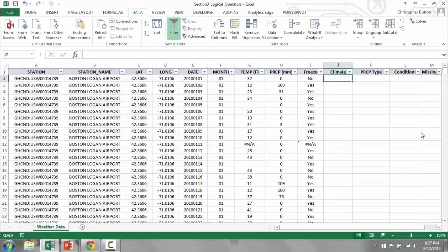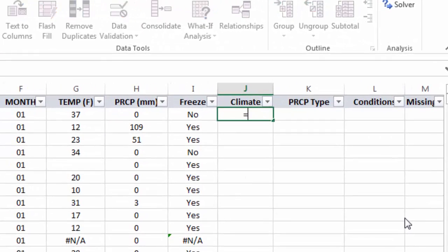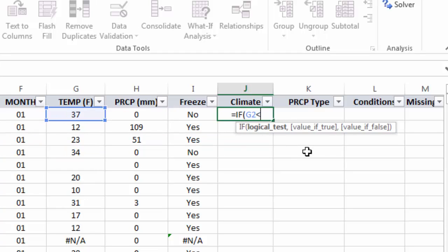And mild otherwise. So I'll start with my equal sign, if, open the parenthesis, logical test, just like before, G2 is less than 40.